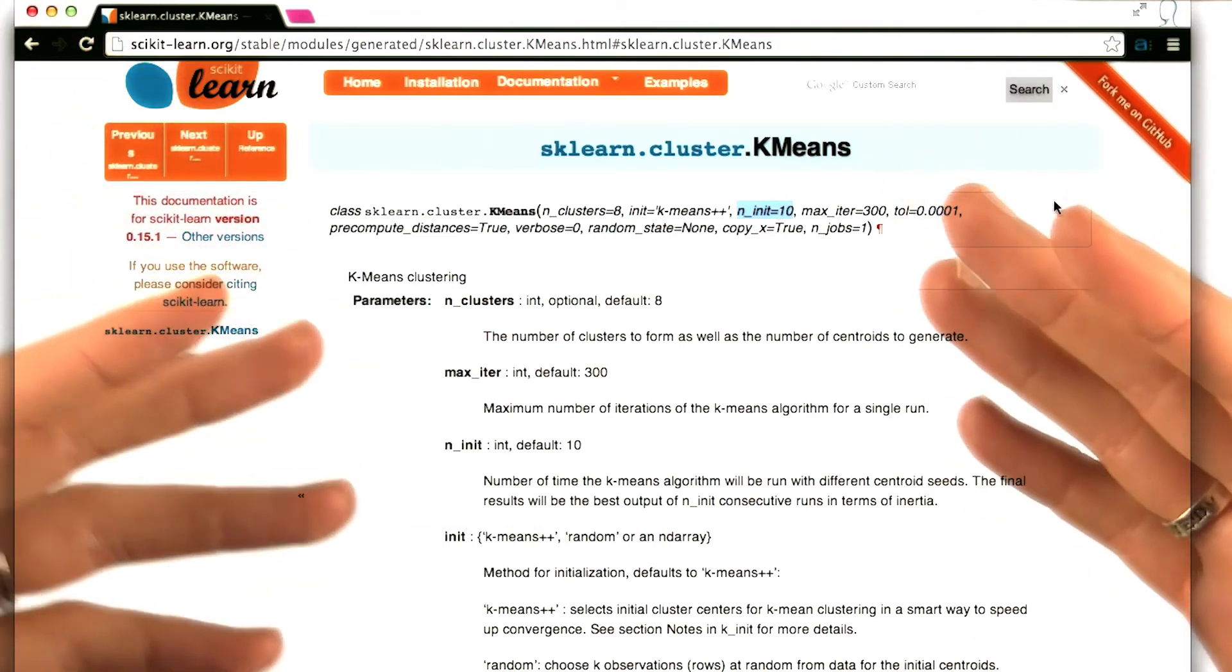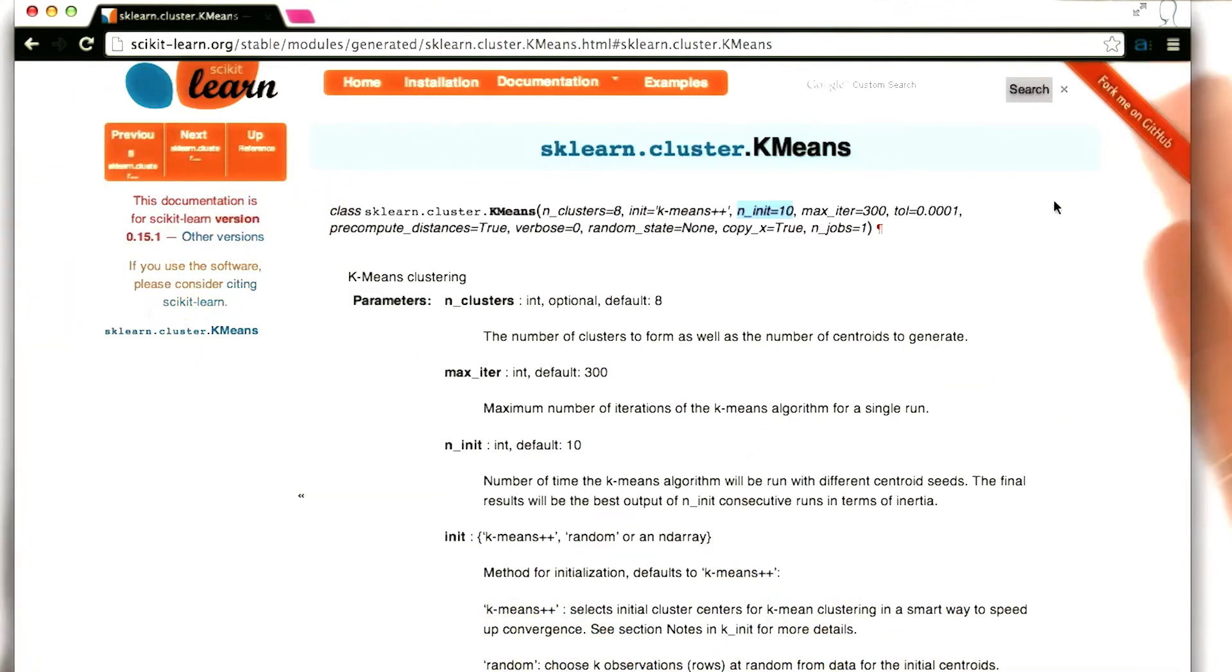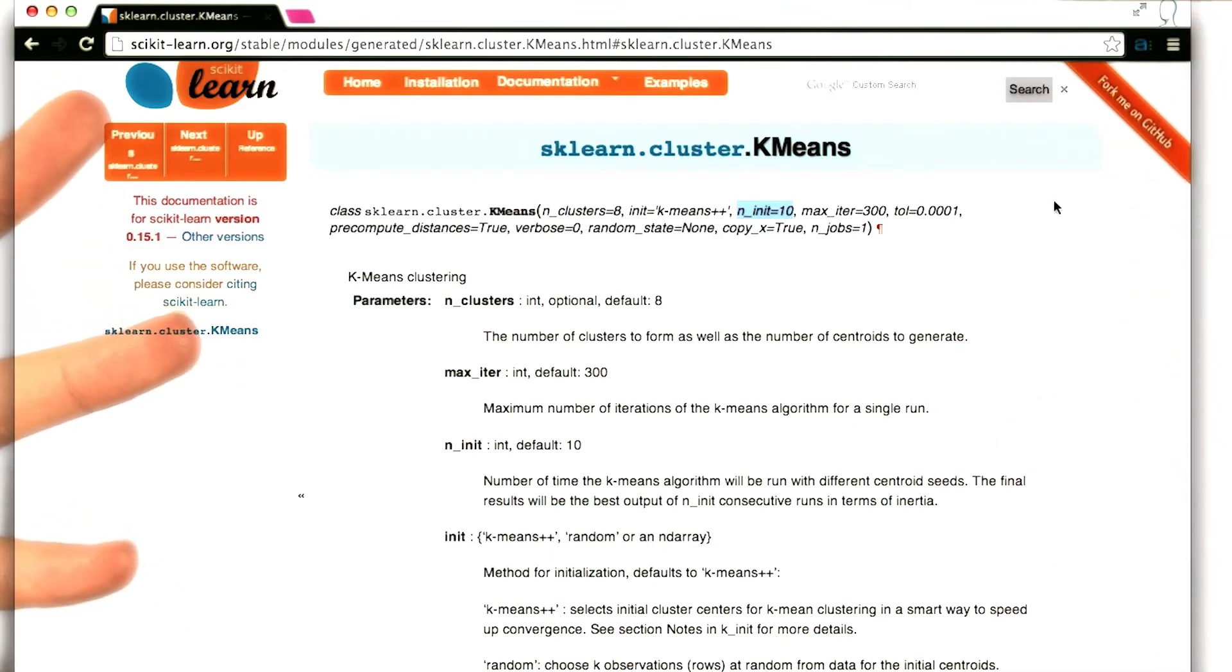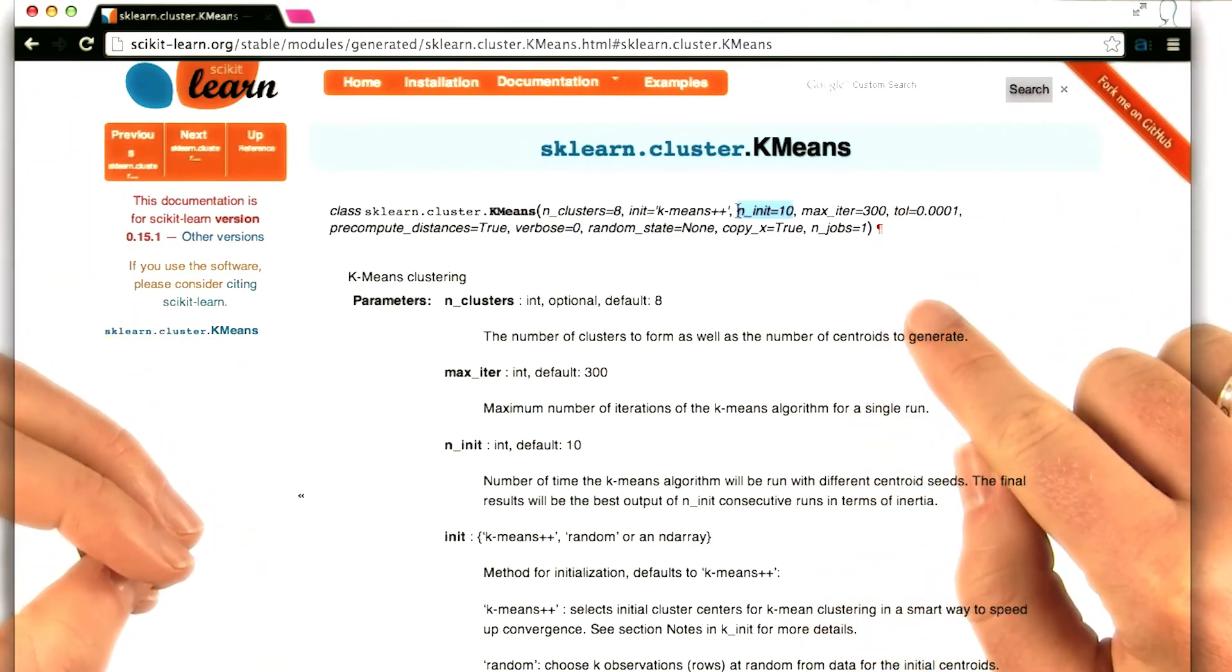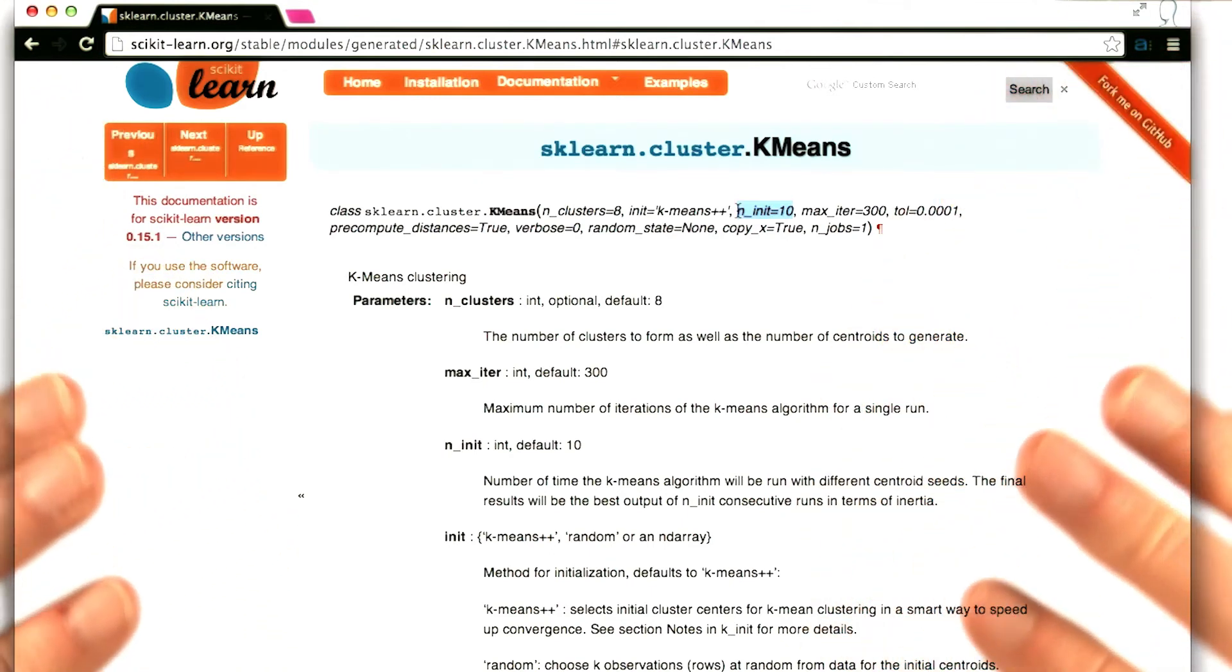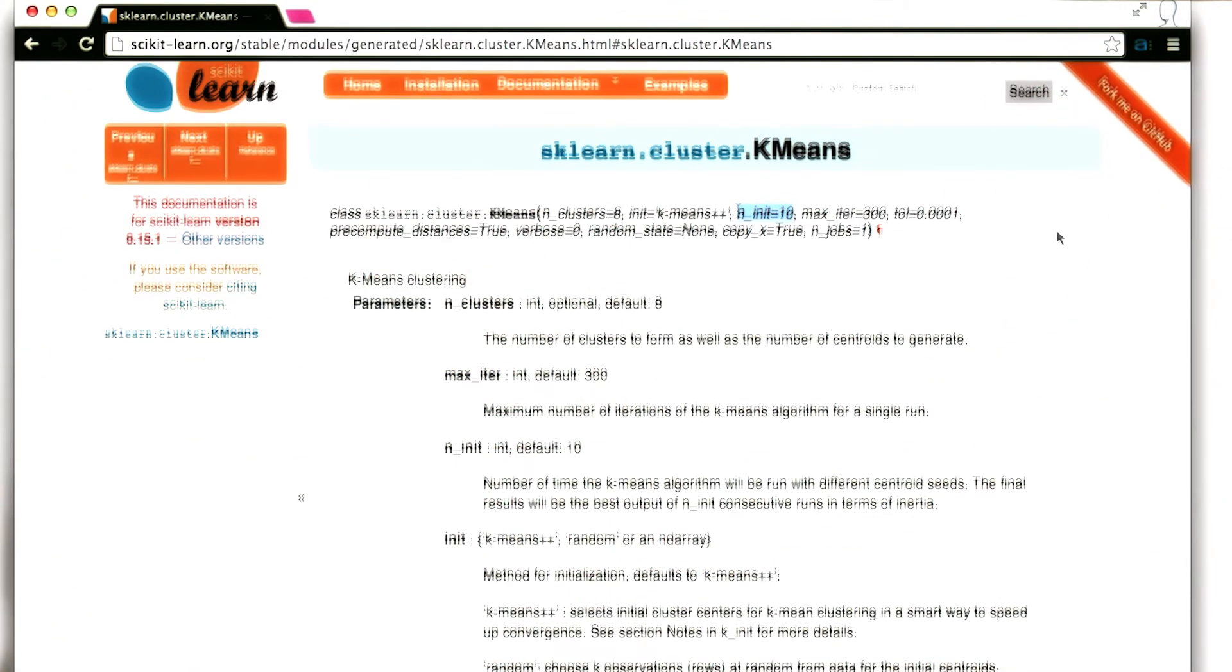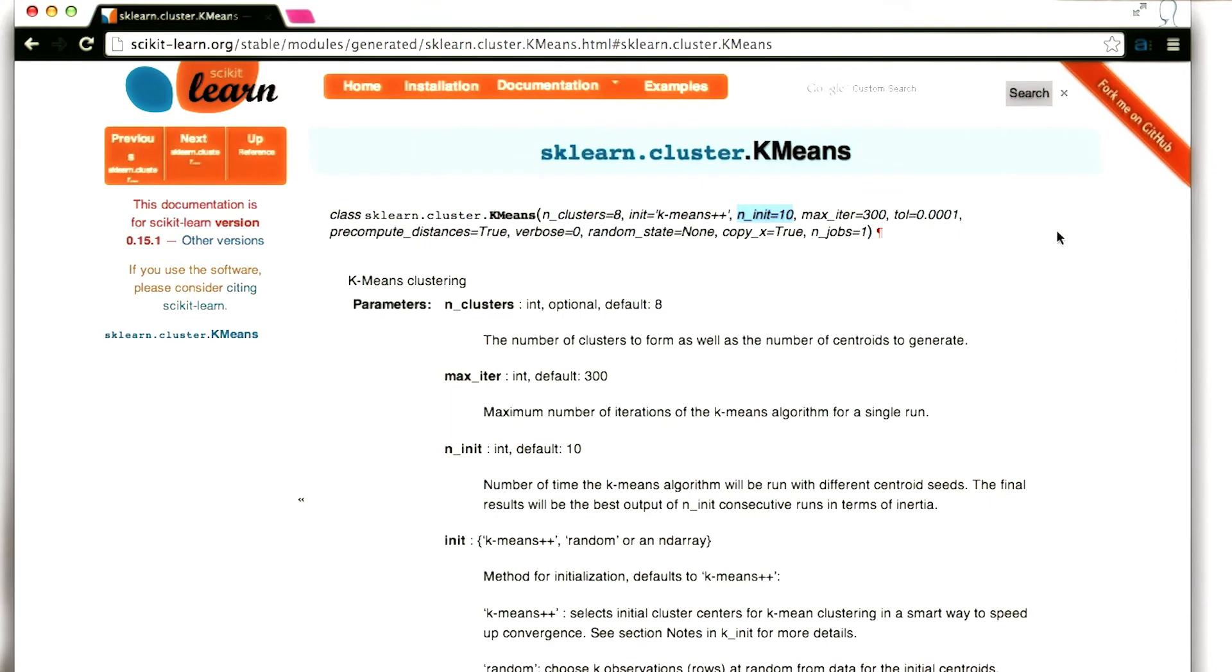And so then you want to repeat the algorithm several times so that any one of those clusterings might be wrong, but in general the ensemble of all the clusterings will give you something that makes sense. That's what this parameter controls—basically how many times does it initialize the algorithm? How many times does it come up with clusters? You can see that by default it goes through it 10 times.